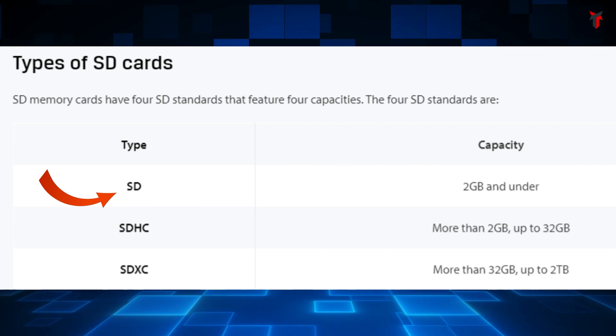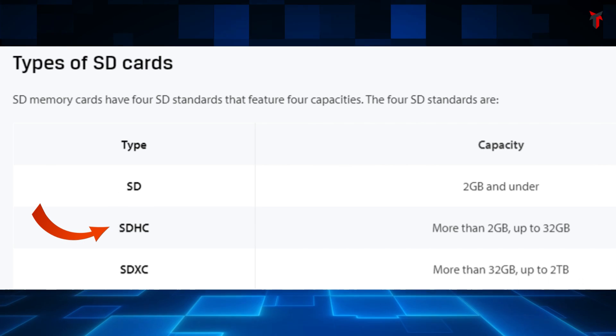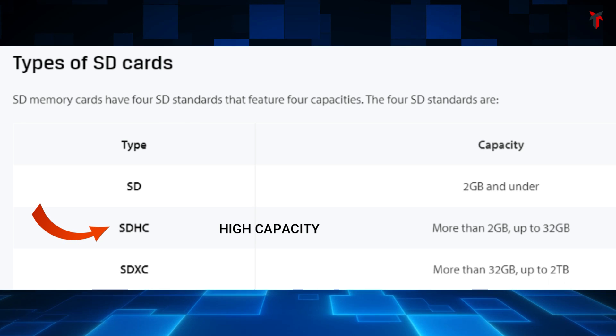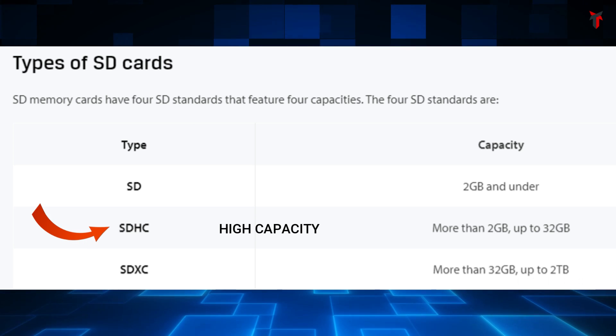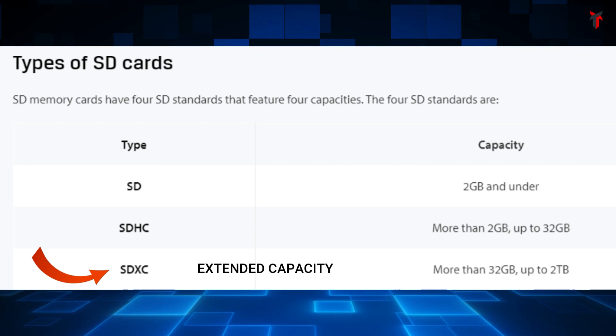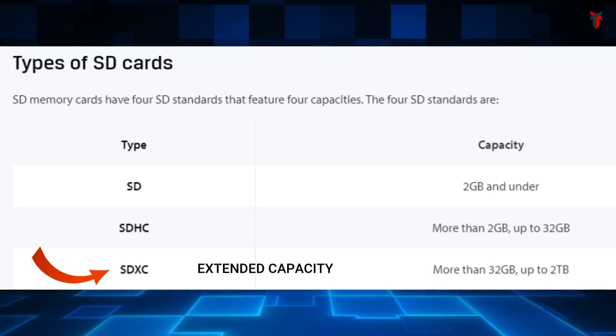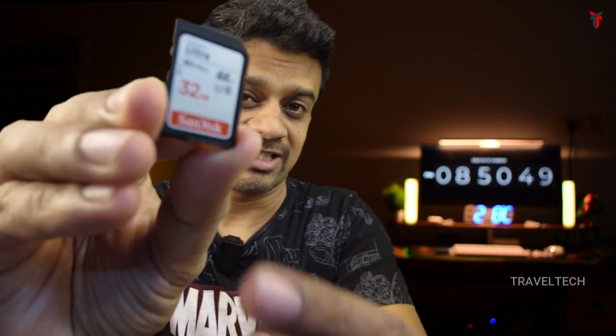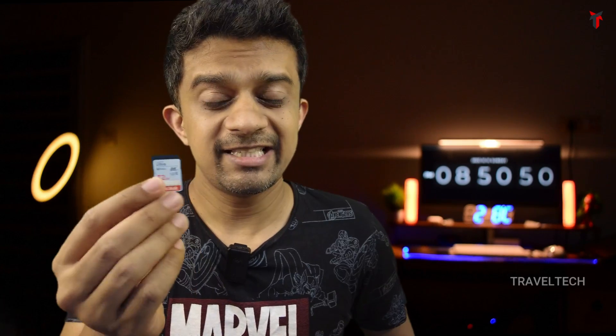The standard SD card has a storage limit of up to 2 GB. The SD HC card — HC stands for high capacity — has storage from 4 GB to 32 GB. The third type is the SD XC — XC stands for extended capacity — with storage from 64 GB up to 1 TB. Looking at a card labeled SD HC, for example, tells you it has capacity from 4 GB to 32 GB, as with this 32 GB card here.